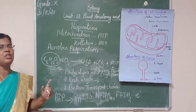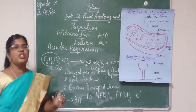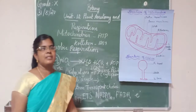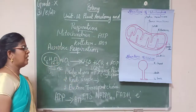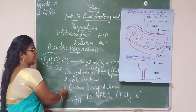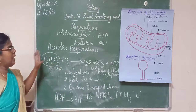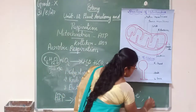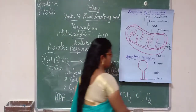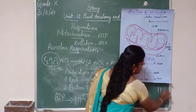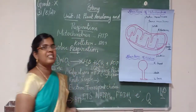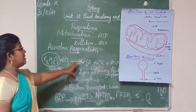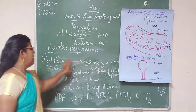Oxidative phosphorylation is the formation of ATP from ADP in the presence of oxygen. During this process, oxygen accepts electrons and is reduced into a water molecule. Thus, these products — ATP, CO₂, and water — are formed during aerobic respiration.